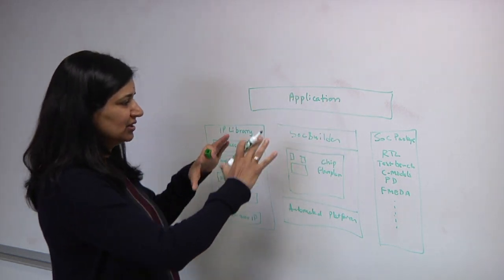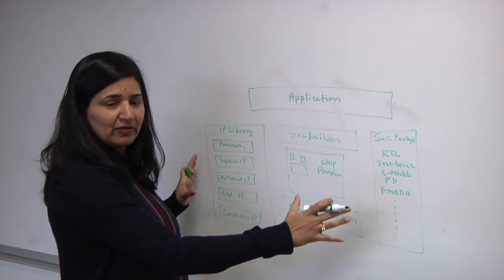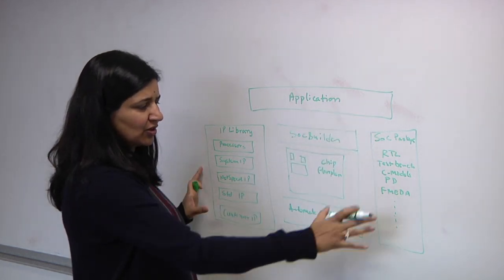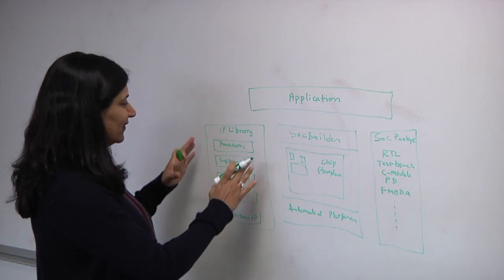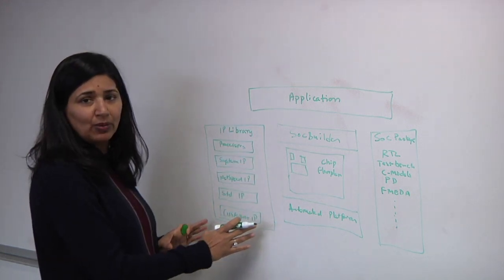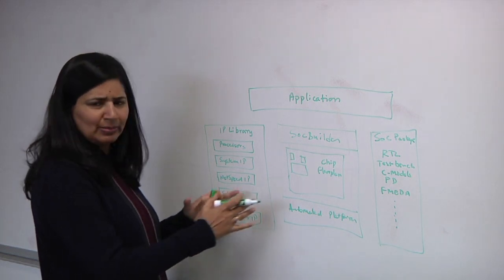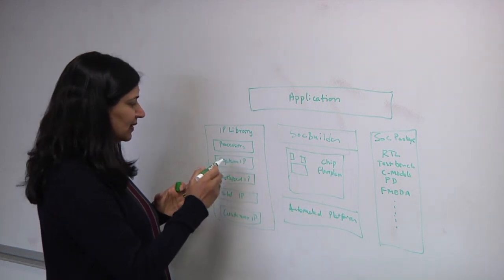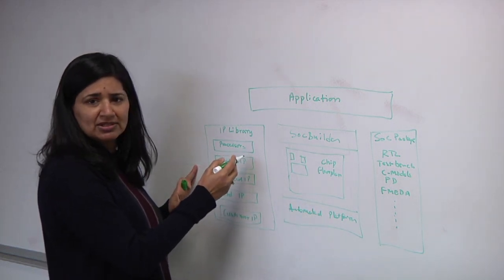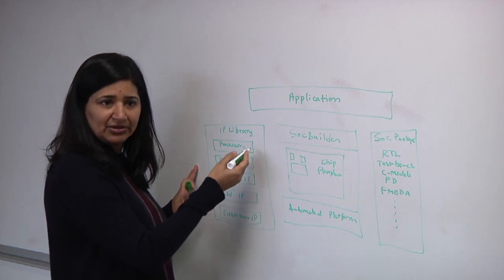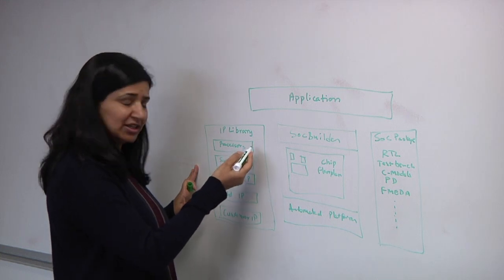So I envision that we will provide our design teams an infrastructure or a tooling capability where they have access to the required IP libraries to build out these semiconductor designs. So what might be some of the components? There are processors of multiple kinds: compute processors, accelerators, DSP engines.